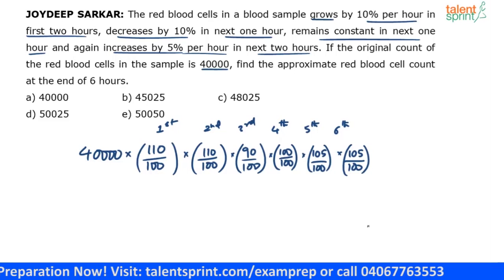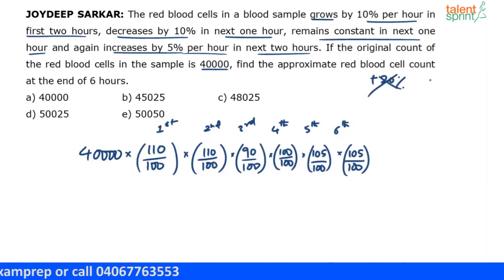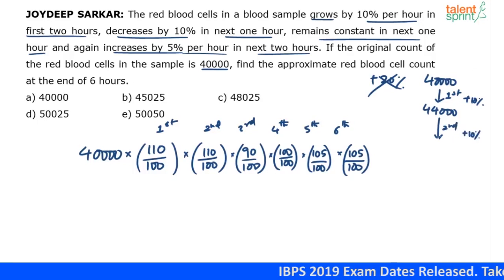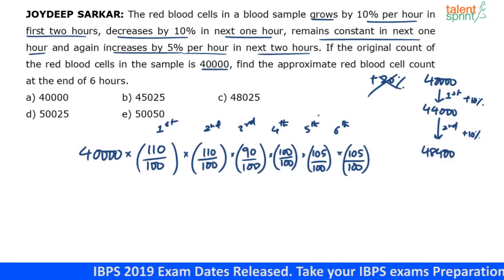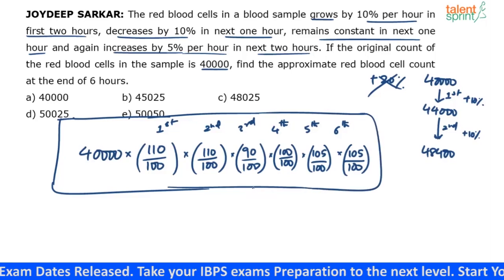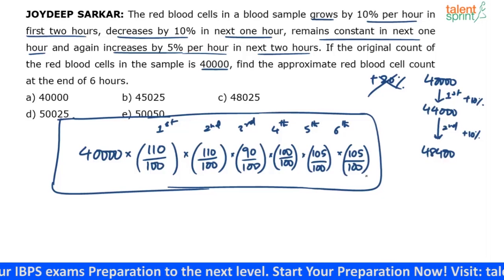One common error: when it says grows by 10% per hour in the first two hours, don't say it increases by 20% at the end of two hours — that would be wrong. 40,000 becomes 44,000 after the first hour. In the second hour the increment is on 44,000, not on 40,000, so 44,000 becomes 48,400. The final count equals 40,000 × (110/100) × (110/100) × (90/100) × (100/100) × (105/100) × (105/100). You simplify this to get the final answer.